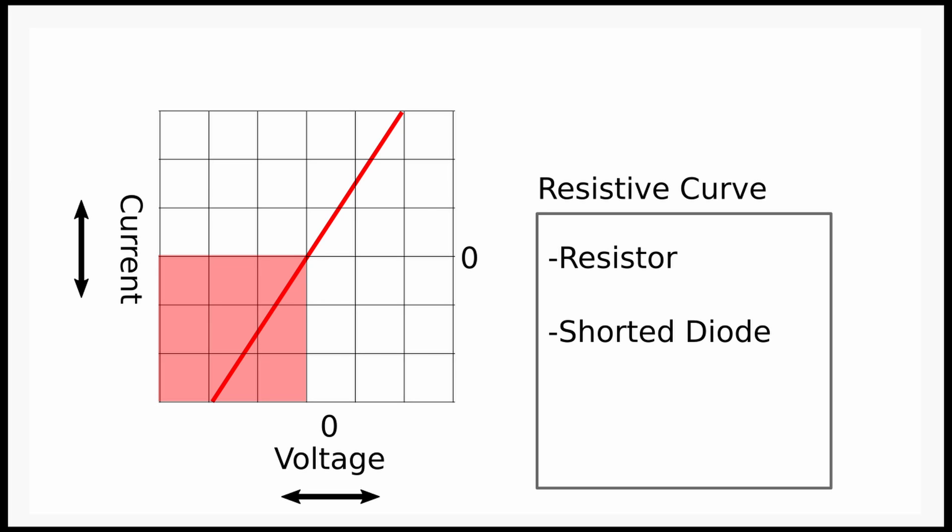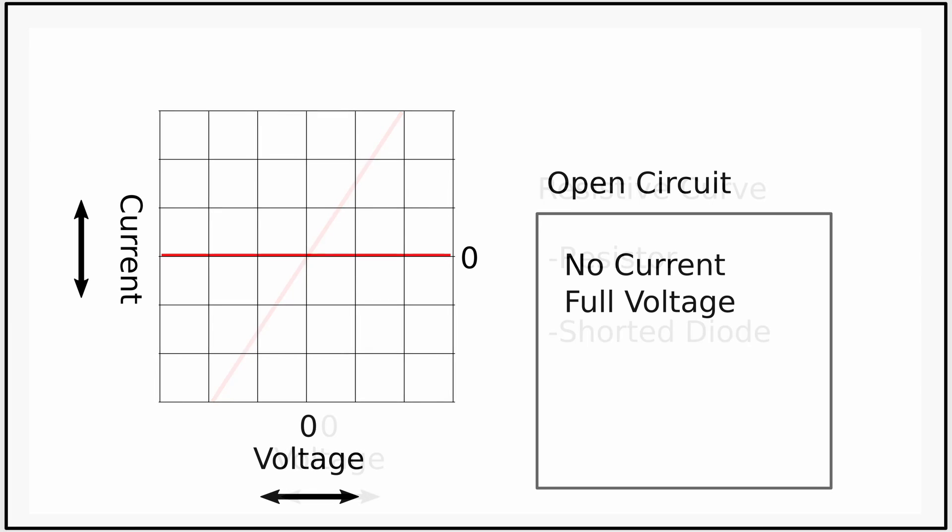With an open circuit, the leads not connected to anything will see a full sweep of voltage with no current deflection.